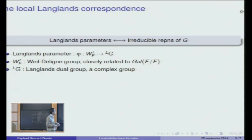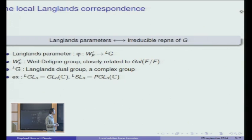The other part, L of bold G, is what we call the Langlands dual group of G, or just dual group of bold G. It's a complex group defined only in terms of the algebraic group bold G, and there is a precise recipe to get the dual group starting from bold G. For example, the Langlands dual of GLN is simply GLN of C, whereas the Langlands dual group of SLN is PGLN of C.